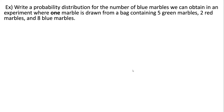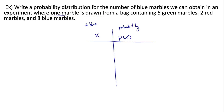Here's another example. I would suggest pausing the video here, try to work this one out on your own, then hit play to see me go through the answer. Write a probability distribution for the number of blue marbles we can obtain in an experiment where one marble is drawn from a bag containing five green, two red, and eight blue marbles. We're only drawing one marble, so we can only end up with either zero blue or one blue marble. The sample space is the same 15 marbles. The probability of getting a blue one is eight out of 15, and the probability of not getting a blue marble is seven out of 15.